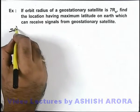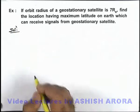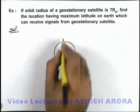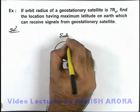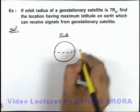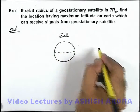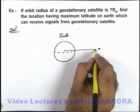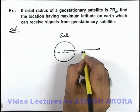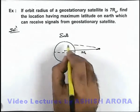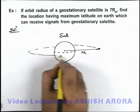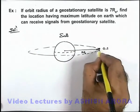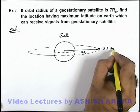If we draw the picture of the situation — say if this is Earth, and in the equatorial plane of Earth we are having a geostationary satellite which is revolving around the Earth with orbit radius 7Rₑ, which is given to us — this is the orbit of the geostationary satellite in the equatorial plane, and this is the geostationary satellite.